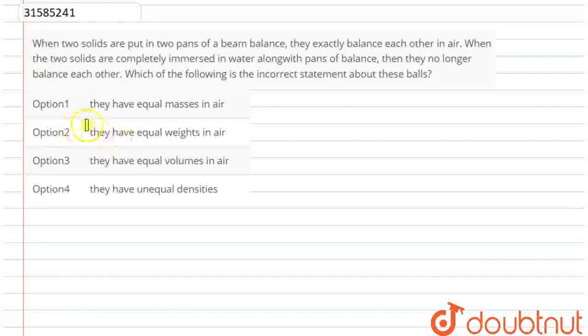Good morning students. Today my question is: two solids are put on two pans of a beam balance. Basically what is a beam balance? It is a simple way to balance two objects. I have put two objects in both pans and they are perfectly balanced. This means if I denote two solids as A and B, mass of A equals mass of B. This is what I know.